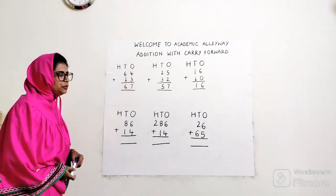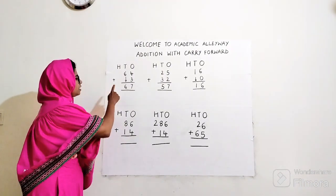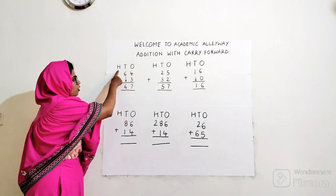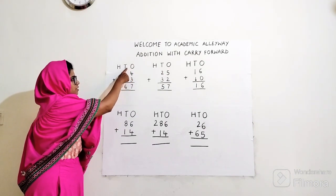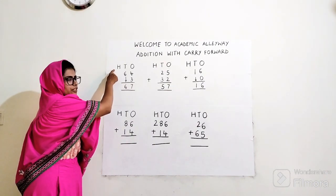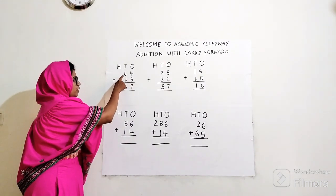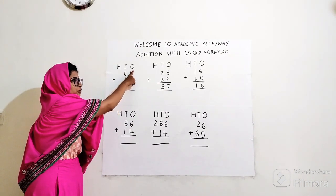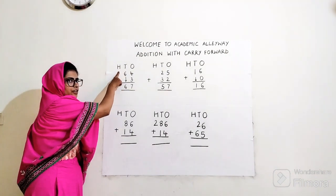Let's start the video. My first example is 64 plus 3. Always write H, T, O — ones, tens, hundreds, and thousands if the number is there. We have to add 64 plus 3. Always start with ones, then go to tens, then hundreds, then thousands — move from right to left.